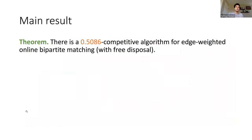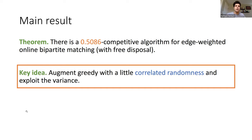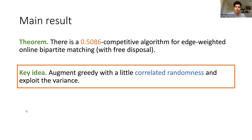This work shows how we can do slightly better, achieving a 0.5086 competitive ratio by augmenting the greedy algorithm. A further generalization with free disposal is submodular welfare maximization, for which greedy gives one-half, and Kapralov et al. showed in 2013 that this upper bound is actually tight under standard hardness assumptions. So this paper also shows a separation between edge-weighted matching and submodular welfare maximization, which is a secondary contribution.